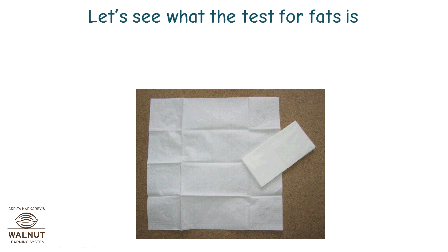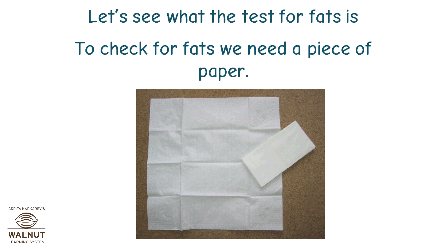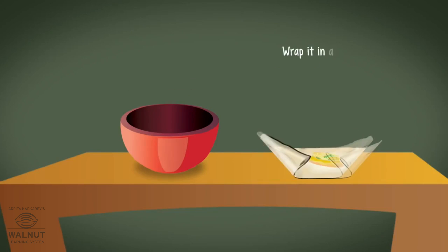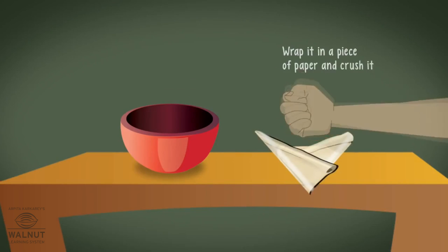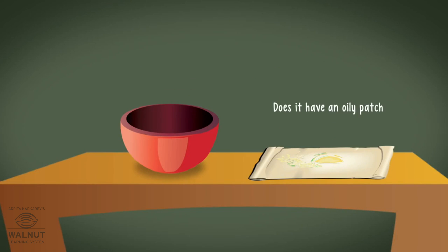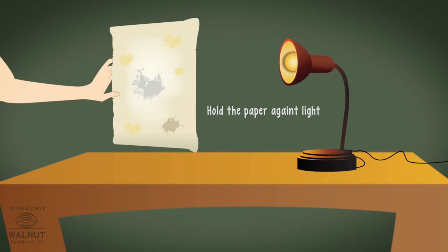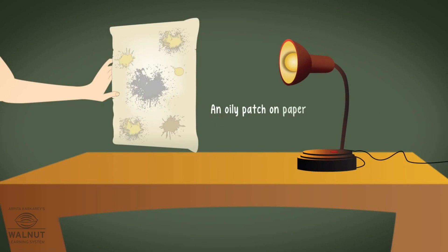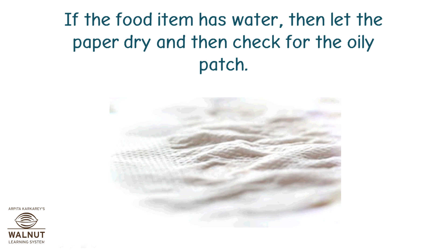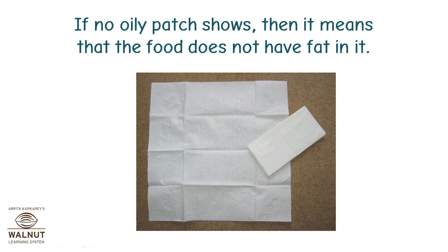Let's see what the test for fats is. To check for fats, we need a piece of paper. Wrap the food in the paper and crush it. Take care that the paper does not tear. Then open up the paper and hold it against the light. Does it have an oily patch on it? That means the food has fat in it. If the food item has water, then let the paper dry and then check for the oily patch. If no oily patch shows, then it means that the food does not have fat in it.